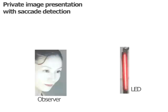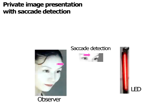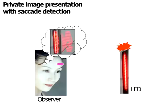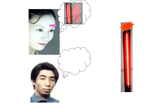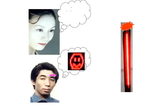If we can detect the observer's saccade as it occurs in real time, we can successfully show 2D images by flickering light sources synchronized with the observer's saccade. To detect when and who makes saccades, the gaze-trigger display system can present different 2D images to each person using only one light array.